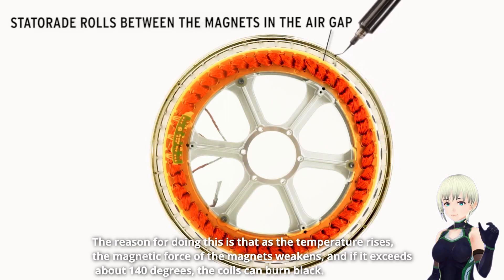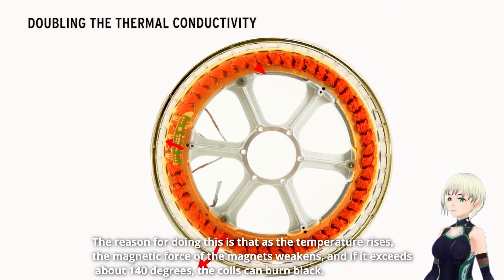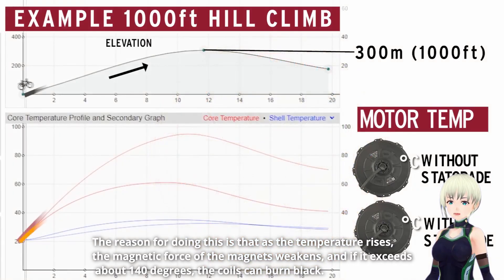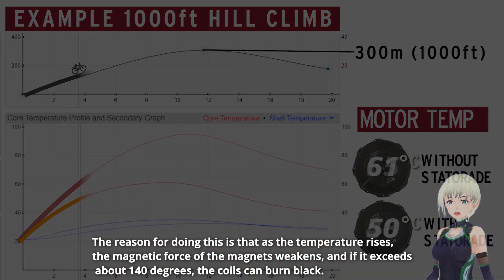The reason for doing this is that as the temperature rises, the magnetic force of the magnets weakens. And if it exceeds about 140 degrees, the coils can burn black.